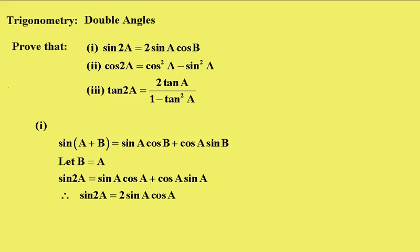Trigonometry double angles. We have to prove that: (1) sin 2A equals 2 sin A cos B. Part 2, cos 2A equals cos squared A minus sin squared A. And part 3, tan 2A equals 2 tan A over 1 minus tan squared A.